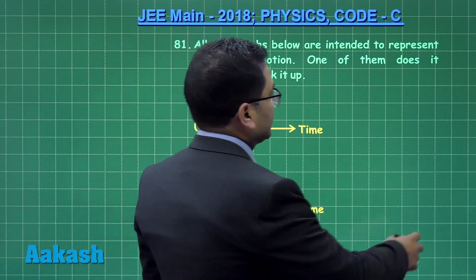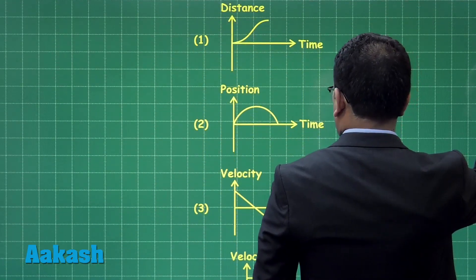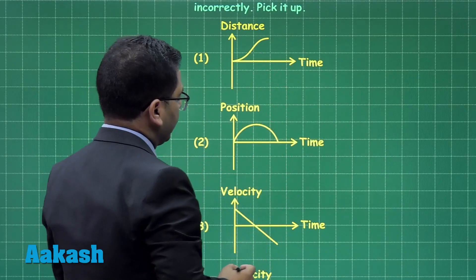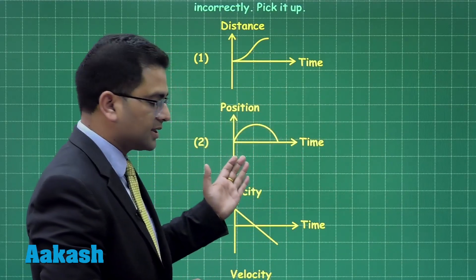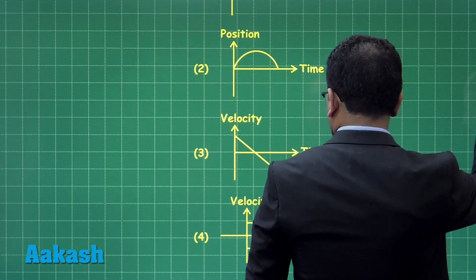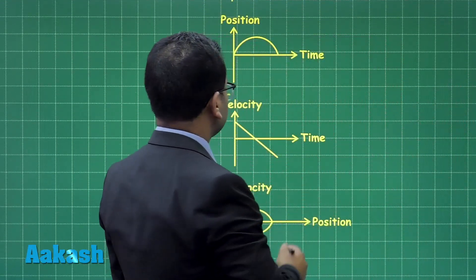For that, what you have to see is that you have to carefully go and visualize all the graphs here. So the first one is distance-time, the second is the position-time in this way, the third is the velocity, and the fourth is velocity versus position.